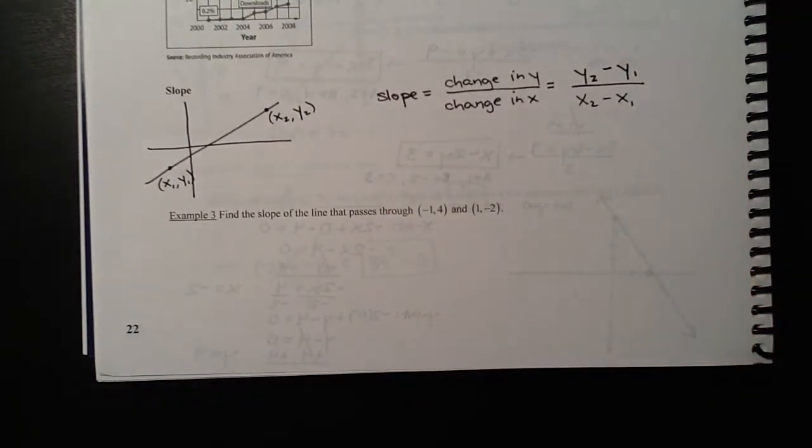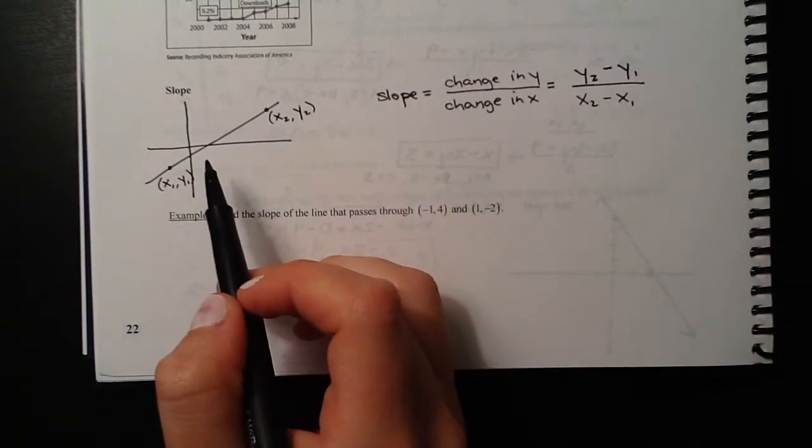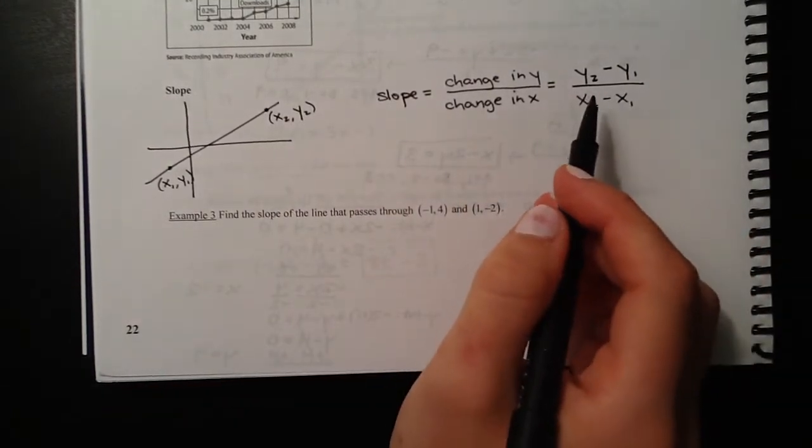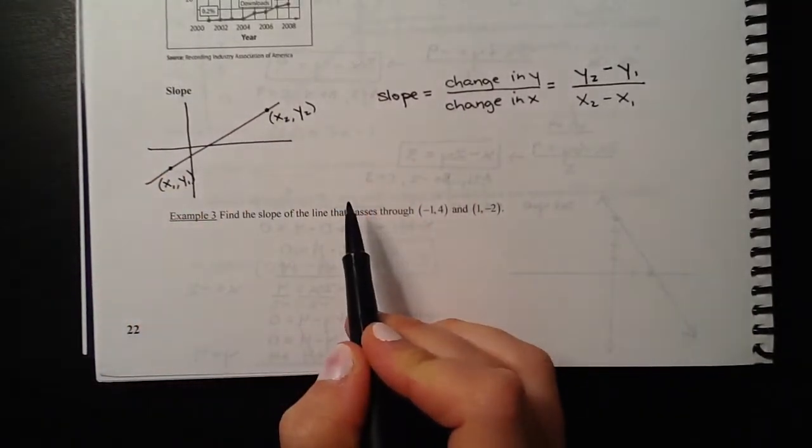What this gives you is basically the steepness of a line. The bigger this number is, the steeper the line will appear. We can also have positive or negative slopes. This would be a positive slope. If our graph was going the other way, it would be a negative slope.